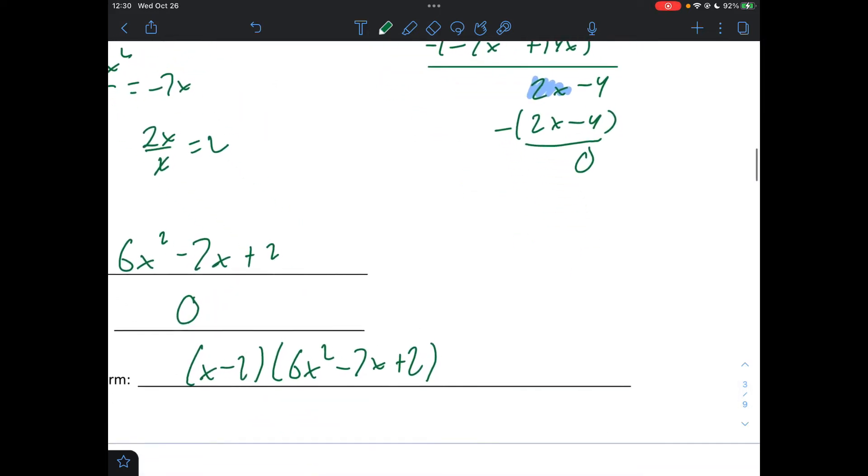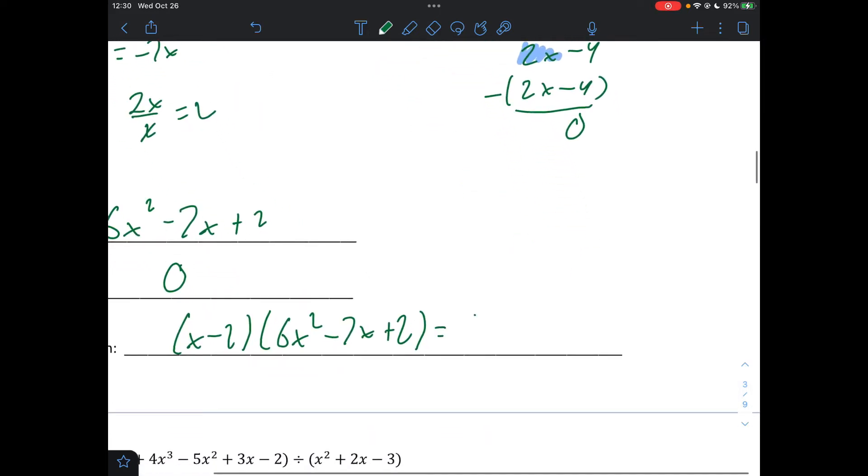All right. Now really, we want to continue here and see if we can factor that any further. So let's try it. Let's see if we can factor this any further. So let's see. This would be 2 and 1. So the only way it would probably work would be 3x and 2x. Yes, this does actually factor further. This would be negative 3. This would be negative 4, which would give us negative 7x. So this is completely factored form.